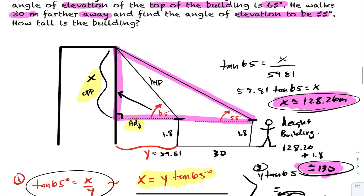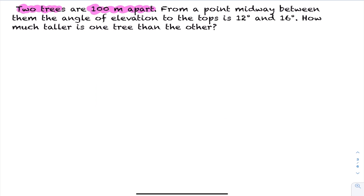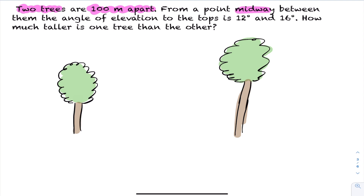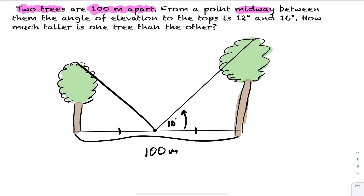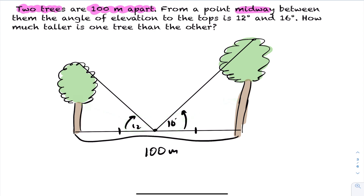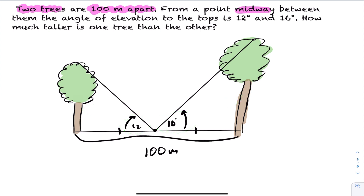Let's take a look at a new problem. Two trees are 100 meters apart. From a point midway between them, the angle of elevation to the tops is 12 degrees and 16 degrees. How much taller is one tree than the other? The trees are 100 meters apart, so from the midpoint, each tree is 50 meters away. A larger angle means a larger opposite side, so the 16-degree angle corresponds to the taller tree and the 12-degree angle to the shorter tree.